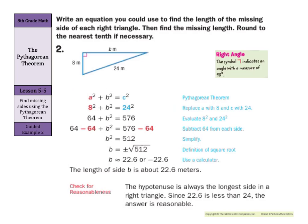In our second guided example, what if one of the legs is missing instead of the hypotenuse? We still solve the equation the same way — substitute in a number for A, a number for B, and a number for C. The difference is we have 8 for A, we keep B as B, and C is 24. After squaring, we subtract 64 from both sides, getting B squared equals 512. Taking the square root using a calculator gives us 22 and 6 tenths meters. Is it reasonable? The hypotenuse needs to be the longest side, and 22.6 is smaller than 24, so yes.